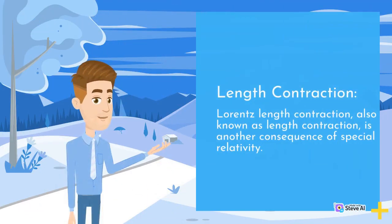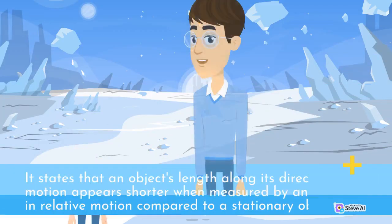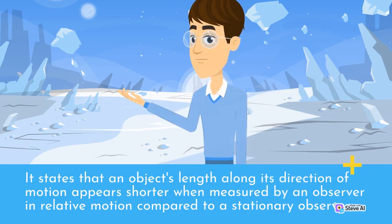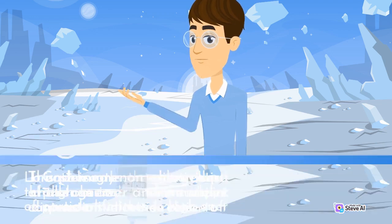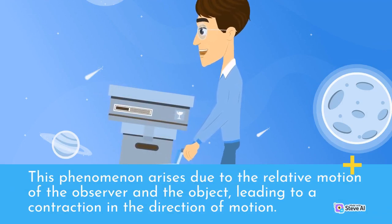Lorentz-Length Contraction, also known as length contraction, is another consequence of special relativity. It states that an object's length along its direction of motion appears shorter when measured by an observer in relative motion compared to a stationary observer. This phenomenon arises due to the relative motion of the observer and the object, leading to a contraction in the direction of motion.